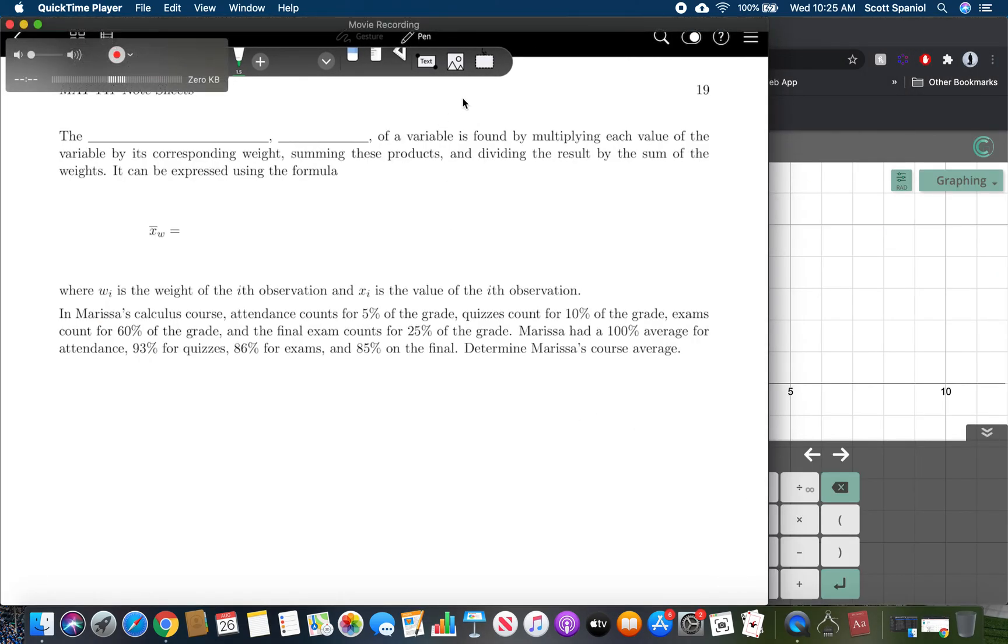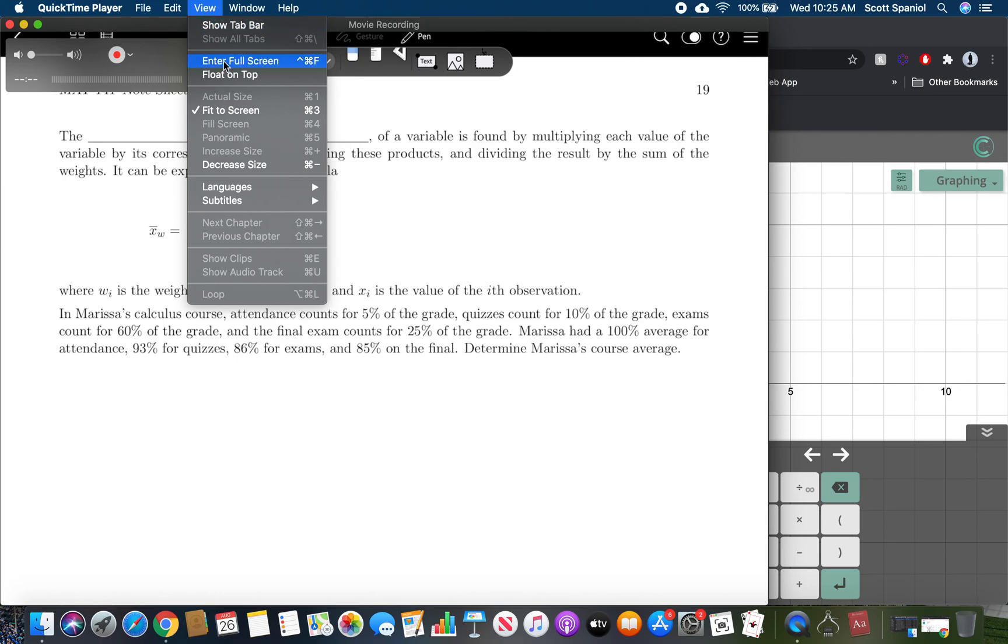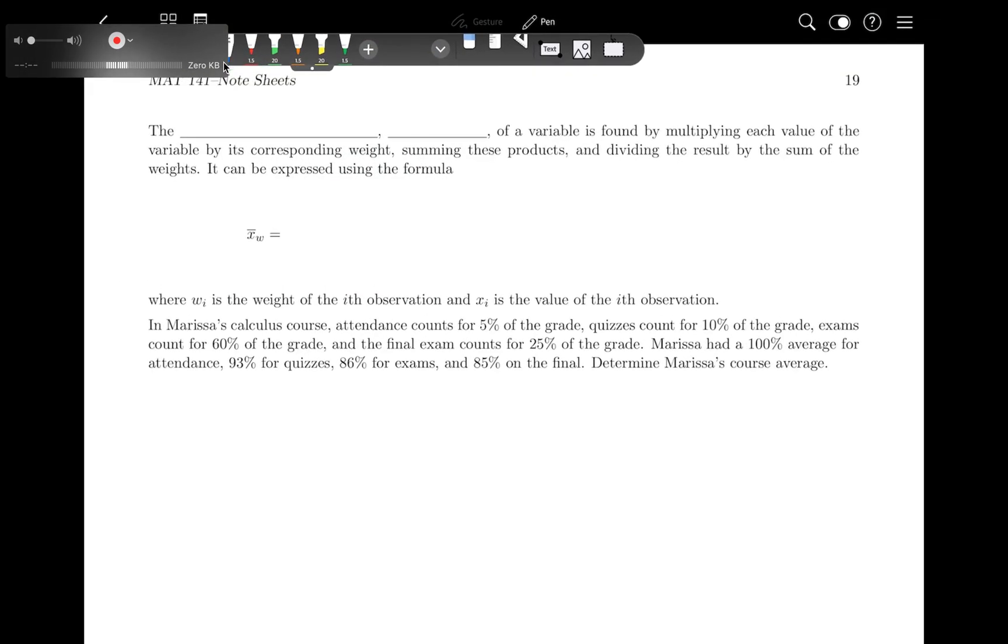And take a look at weighted means. Weighted means are the more useful thing in this section. The weighted mean, which is x bar with a little subscript w of a variable, is found by multiplying each value of the variable by its corresponding weight, summing these products and dividing the results by the sum of the weights. It can be expressed using the formula.